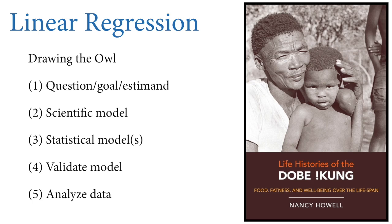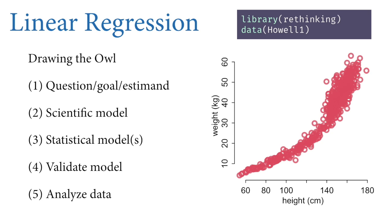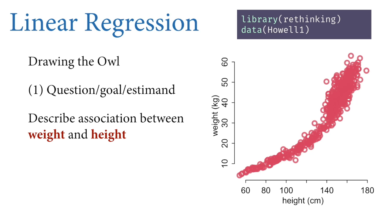Today we'll work through a simple data analysis problem focused on human growth. We'll use data from anthropologist Nancy Howell's book—life history and demography data of the !Kung people, contained in the rethinking package and loadable with data('Howell1'). We're focusing on height and weight today. Our basic question is to describe the association between weight and height, important for human biology and evolutionary life history theory.